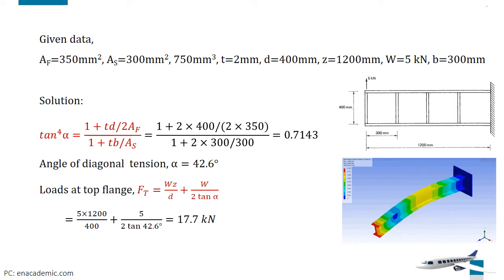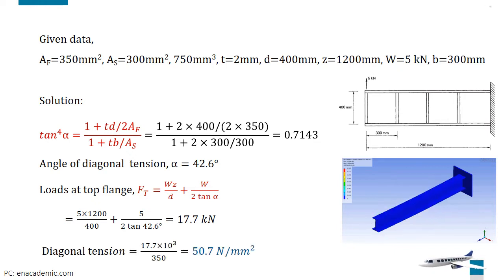Hence, the direct stress in the top flange produced by the externally applied bending moment and the diagonal tension is indirectly proportional to the flange cross-sectional area. By dividing top flange loads with flange cross-sectional area, we can get the diagonal tension. Then the diagonal tension is 50.7 N/mm².